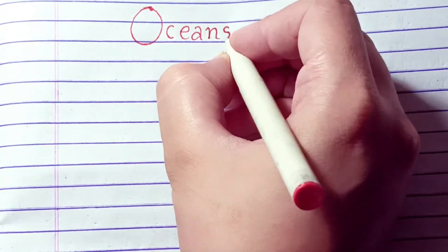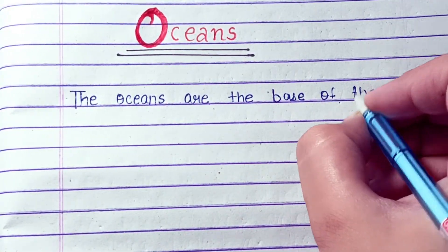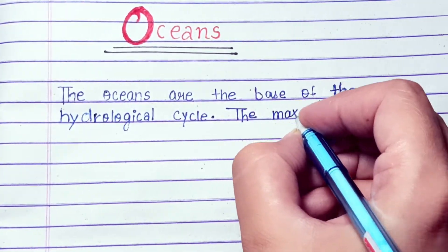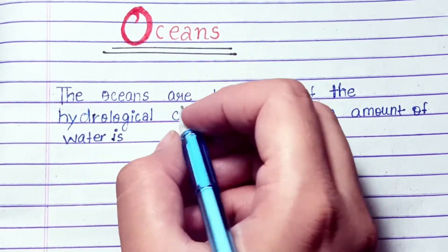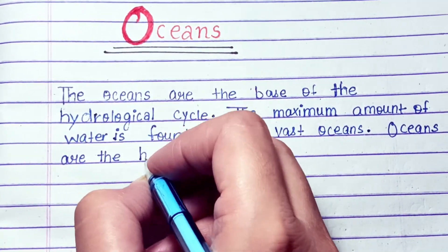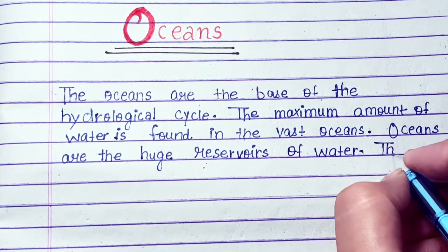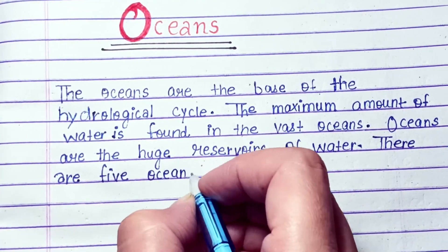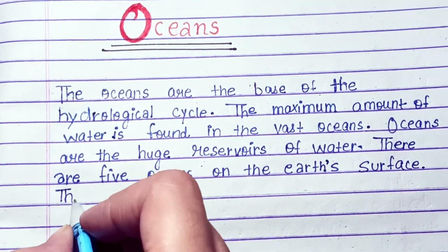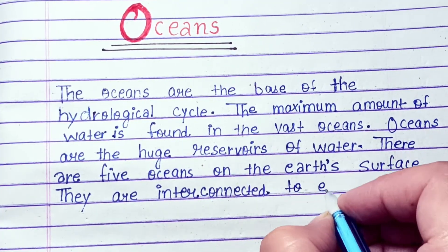Hello everyone, welcome back to our channel. Today's topic is oceans and its tides, so let's get started. The oceans are the base of the hydrological process; the maximum amount of water is found in the vast oceans. Oceans are the huge reservoirs of water. There are five oceans on the Earth's surface.